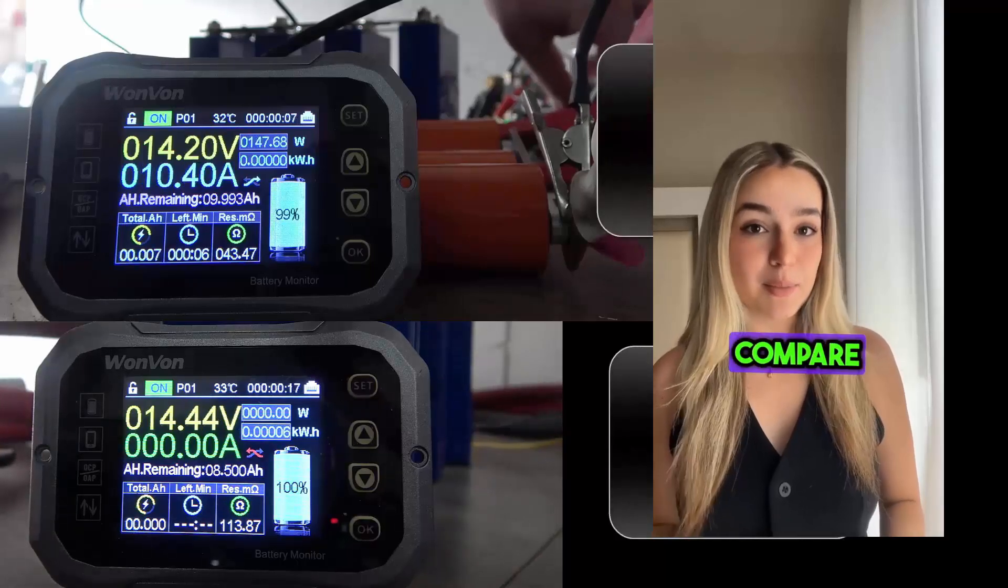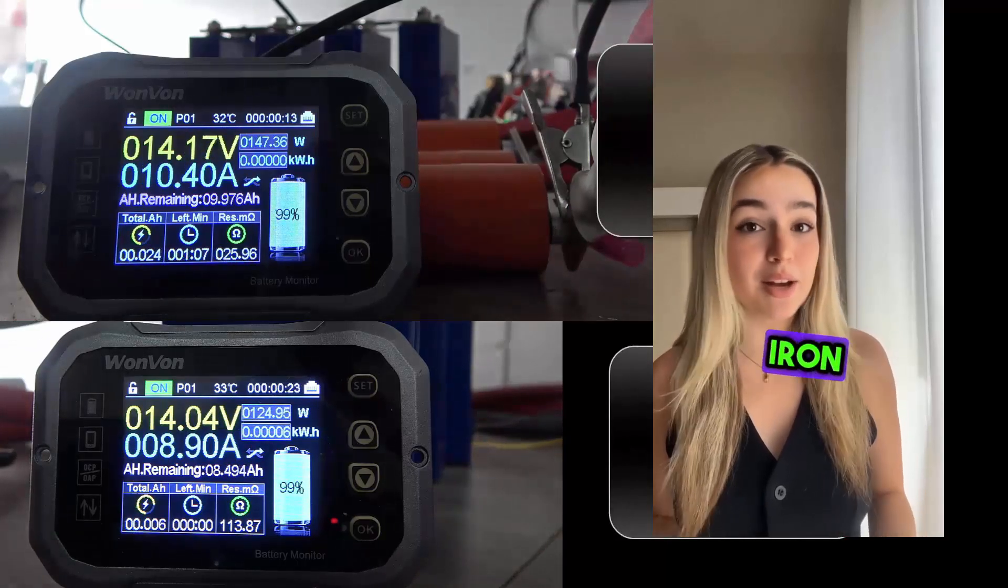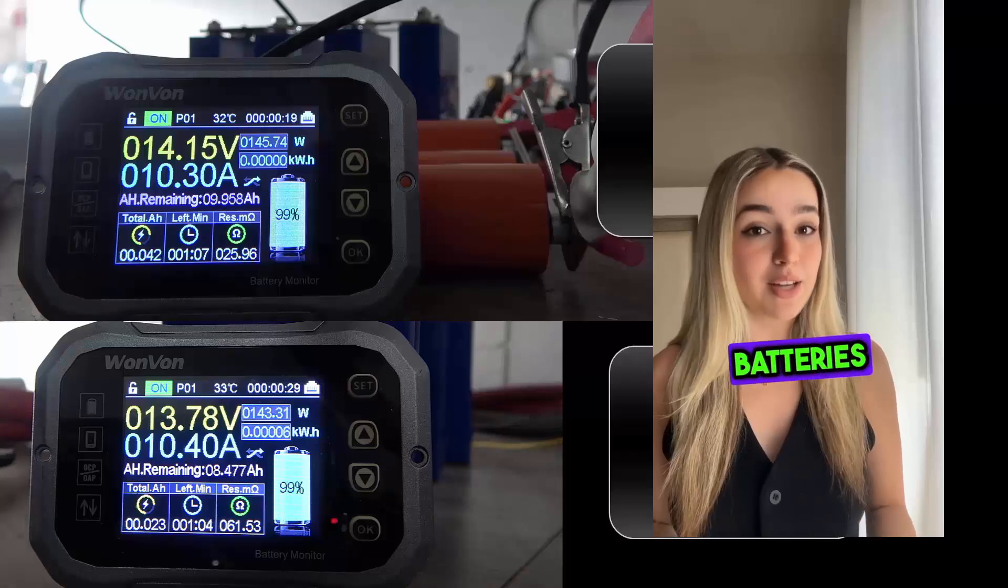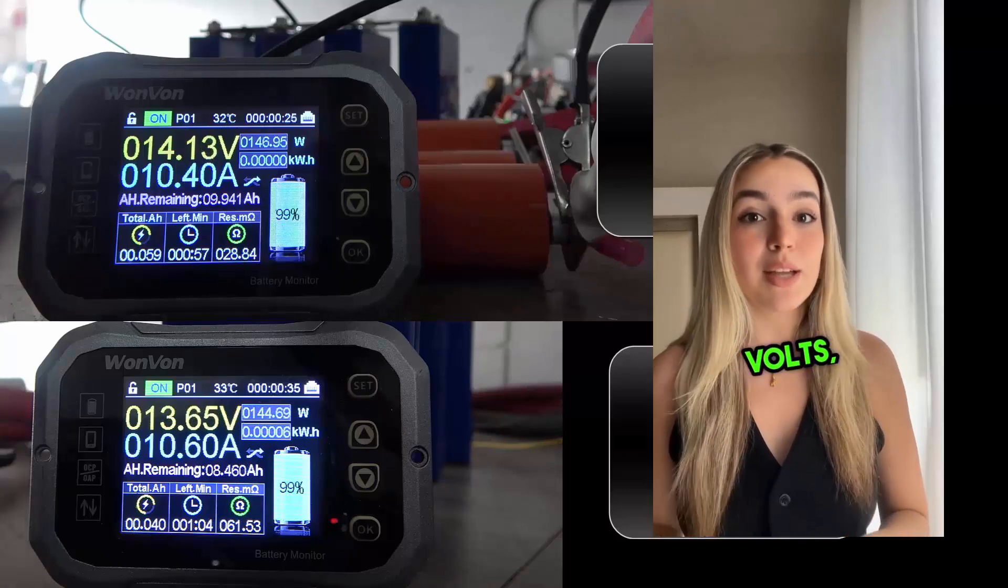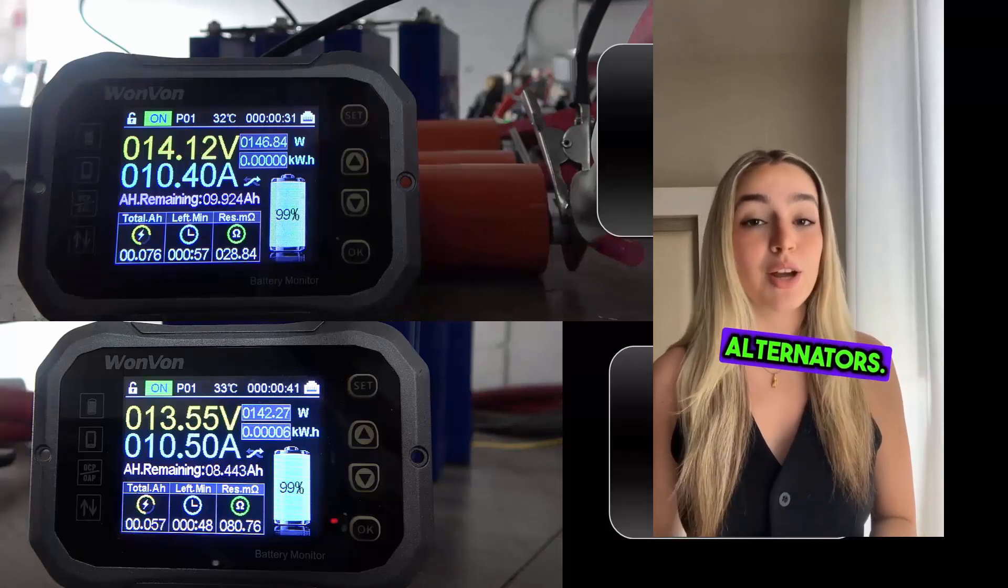In today's video, we are going to compare the usable capacity of lithium iron phosphate and sodium ion batteries when charged to 14.4 volts, similar to most vehicles' stock alternators.